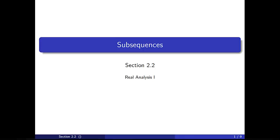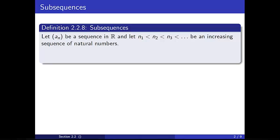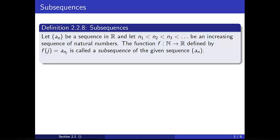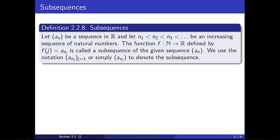In this video we will discuss subsequences from section 2.2. Let a_n be a sequence of real numbers and let n_1, n_2, n_3, and so on be an increasing sequence of natural numbers. The function f from the natural numbers to the real numbers given by f(j) = a_{n_j} is called a subsequence of the given sequence a_n. We use the notation a_{n_j} starting at j=1, or simply a_{n_j}, to denote the subsequence.